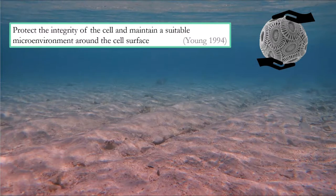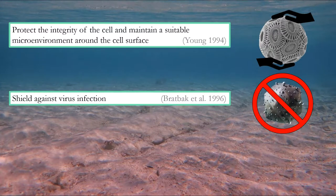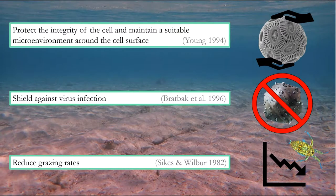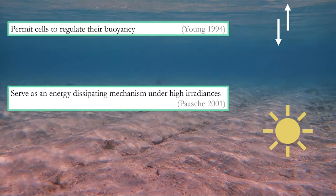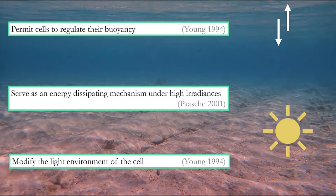Several theories have been proposed in an attempt to explain the function and evolutionary advantage coccoliths confer. These include that the coccosphere could protect the integrity of the cell and maintain a suitable microenvironment around the cell's surface, shield against virus infection, reduce grazing rates, permit cells to regulate their buoyancy, serve as an energy dissipating mechanism under high irradiances, and or modify the light environment of the cell. Although the function of coccoliths is not certain, the role of coccolithophores and their coccoliths in Earth's biogeochemistry has been recognised as important and complex.